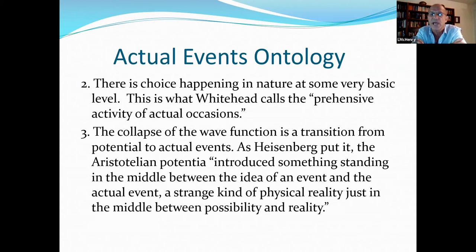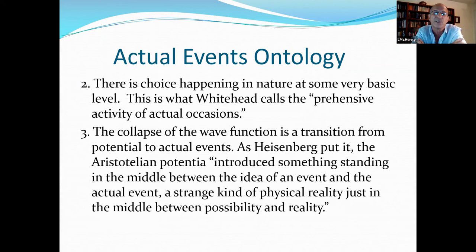Secondly, according to Stapp, there is a choice that's happening in nature at some very basic level, and this corresponds to what we call Whitehead's prehensive activity of actual occasions. Third, the collapse of the wave function is a transition from the potential to the actual events, or as Heisenberg put it, the Aristotelian potentia introduced something standing in the middle between the idea of an event and the actual event, a strange kind of physical reality just in the middle between possibility and reality.